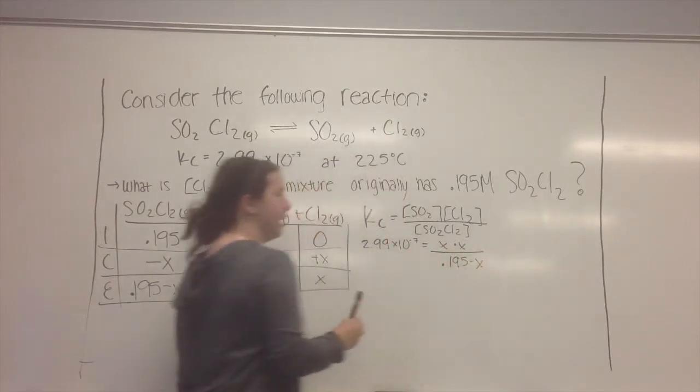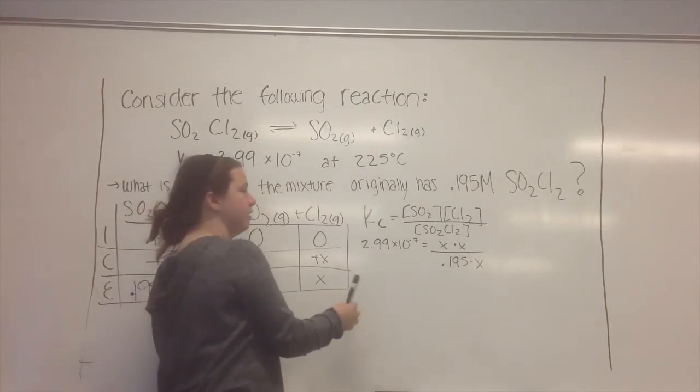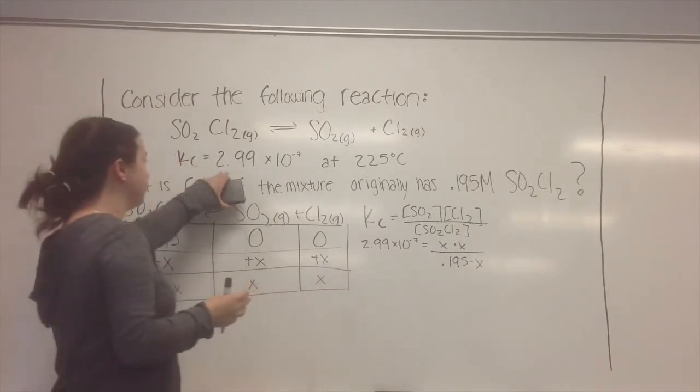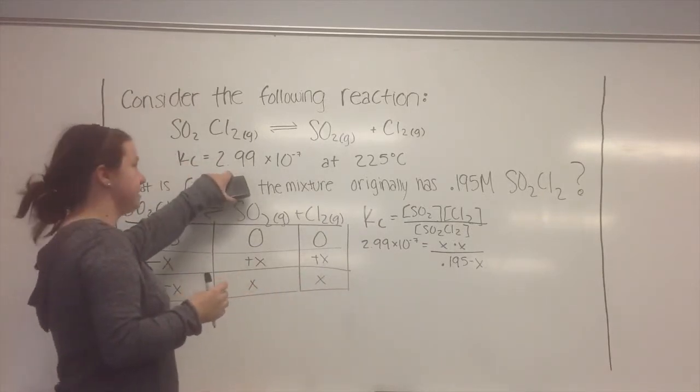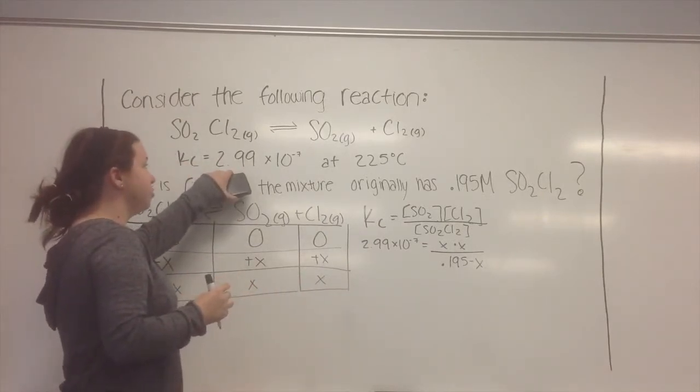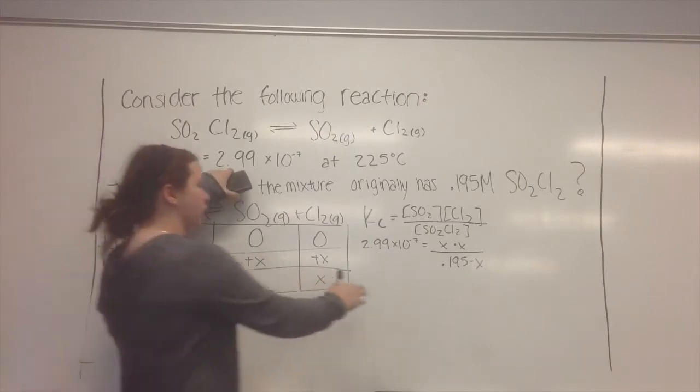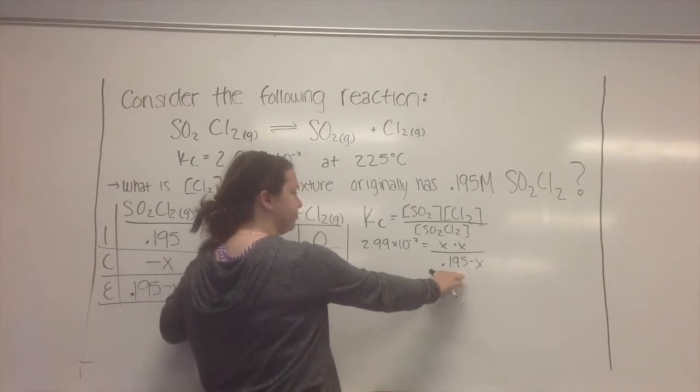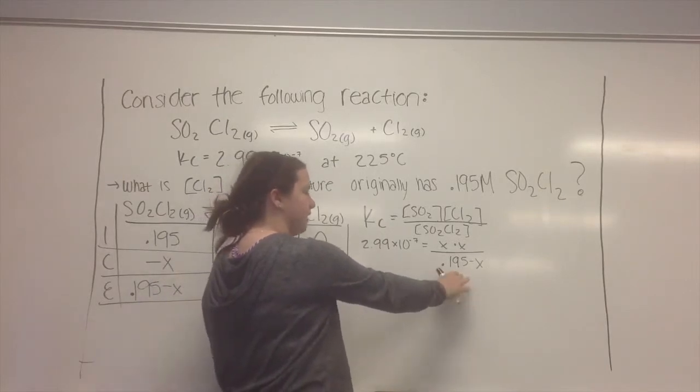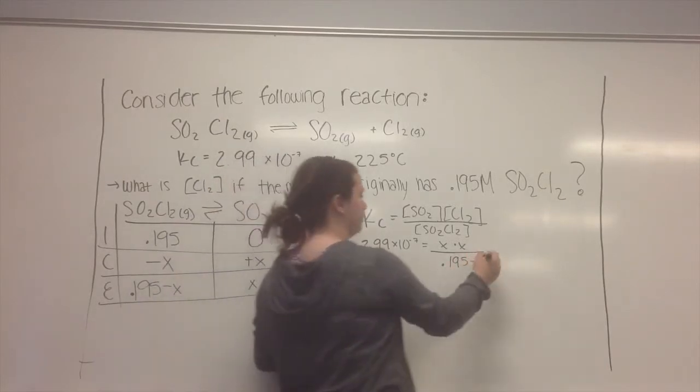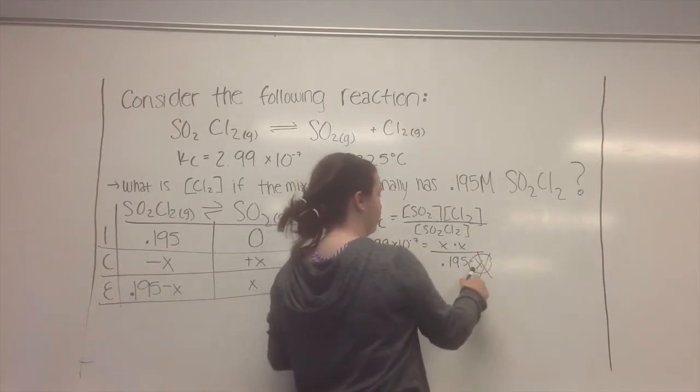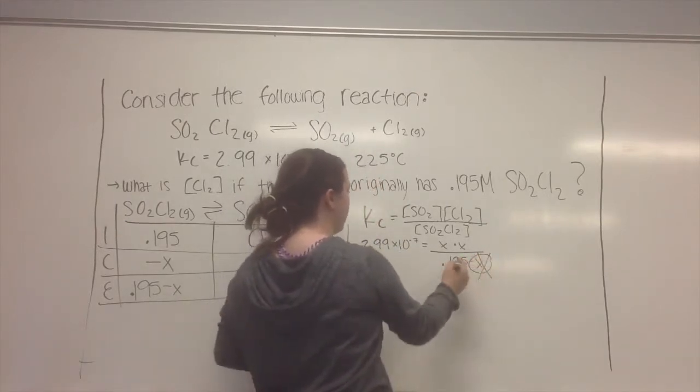And this is where the X is small approximation comes in. So if you look at your K sub C value and it's really small, kind of like this is, then you can assume that it won't really make a big change right here when you are looking at the significant figures. So you can kind of just mark this out. And we'll prove why a little bit later. So you can mark that out.